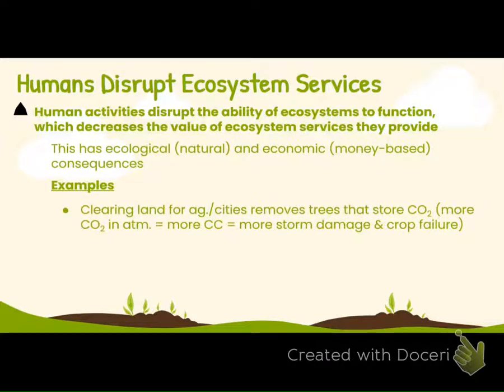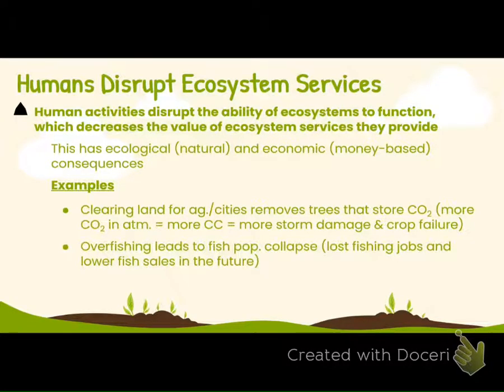Examples include: clearing land for agricultural use or cities removes trees and removes habitat for organisms like coyotes, forcing them to come down into the city to hunt. Sometimes if we overfish, that leads to a population collapse, like what happened in the 1960s with codfish in the Atlantic Ocean — resulting in lots of jobs lost, lower fish sales, and the cost of cod skyrocketing.